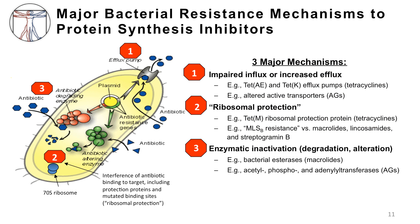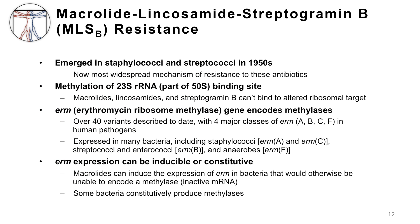This slide was introduced in the Part 1 video but is shown again here to point out a unique resistance mechanism. MLSB resistance first emerged in the 1950s in gram-positive pathogens and is now the most common resistance mechanism against three types of antibiotics: the macrolides, lincosamides, and streptogramin B. This type of resistance results from methylation of the 50S ribosomal subunit, specifically its 23S rRNA component, at the target binding site of these antibiotics, preventing their binding and activity.